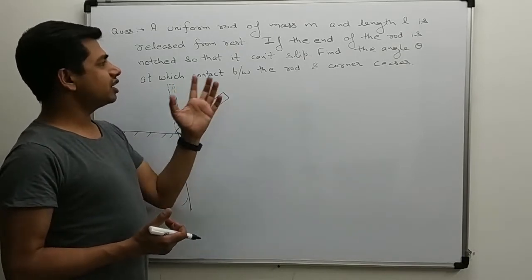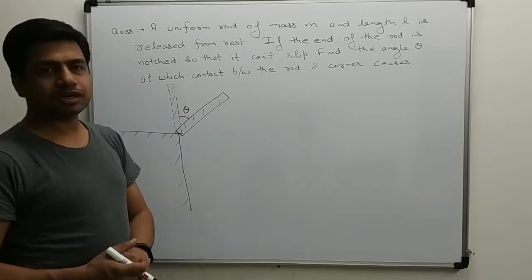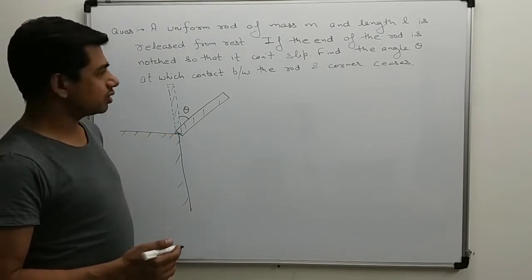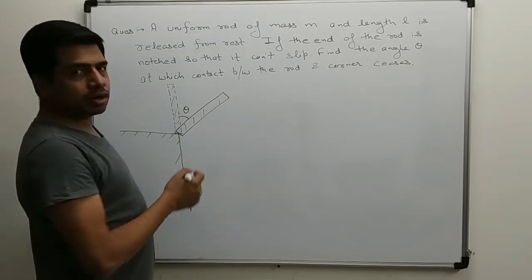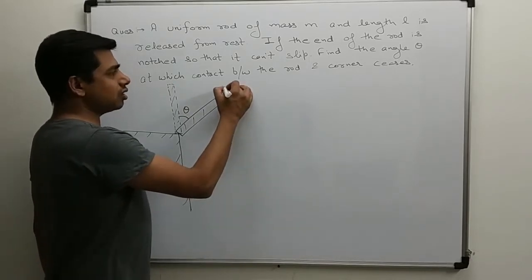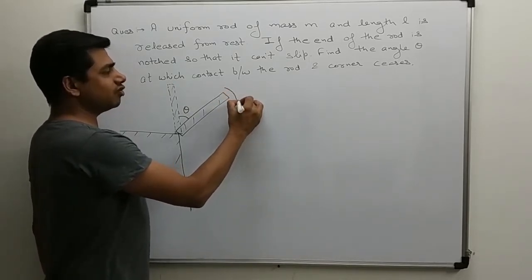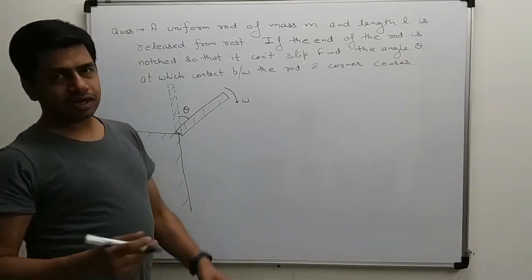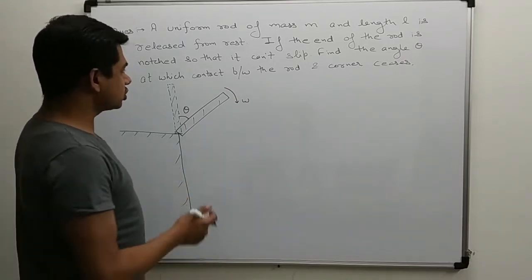Find the angle theta at which contact between the rod and the corner seizes. Kis angle pe contact seize ho ga? When the rod rotates theta angle, what will be its angular velocity? First we will find angular velocity. For finding angular velocity, we have to use energy conservation.